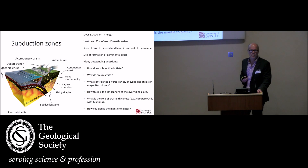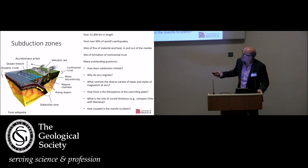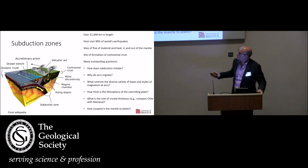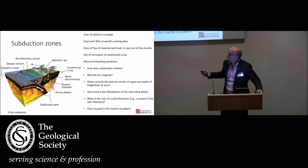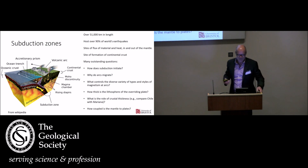There are still many outstanding questions associated with subduction — how does subduction initiate, why and how do arcs migrate in different settings, and what controls the diverse variety of styles of magmatism? This diagram from Wikipedia illustrates the setup: a down-going lithosphere around 80 to 100 kilometers thick going into the mantle, and the overriding plate. A key question is what role does the thickness of the crust play, from 14 to 15 kilometers thick at Mariana versus 60 to 70 kilometers in parts of Chile.